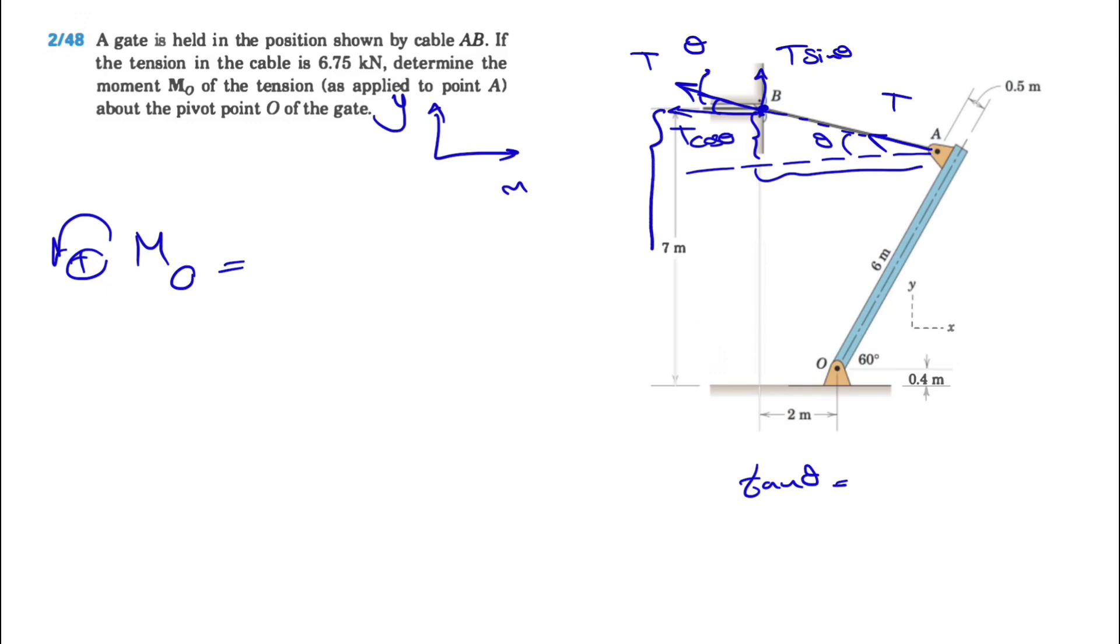We know this whole distance from here to here is 7 meters. If we subtract that by this side of the right triangle, which we know has a 60 degree angle, then in this right triangle this will be 6 sine 60 degrees, and the other base would be 6 cosine 60 degrees. We have this little distance here which is 0.4 meters from the question.